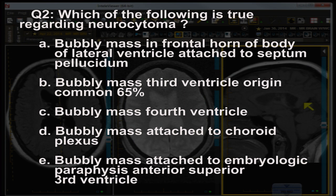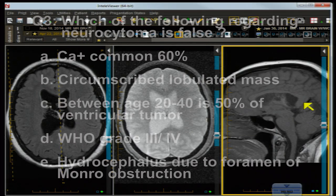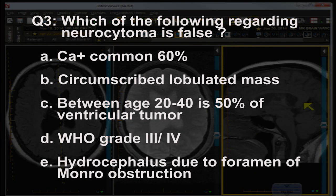A) bubbly mass of the frontal horn or body of the lateral ventricle attached to the septum pellucidum; B) bubbly mass in the third ventricle — origin common 65%; C) bubbly mass in the fourth ventricle; D) bubbly mass attached to the choroid; E) bubbly mass attached to the embryologic paraphysis of the anterosuperior third ventricle.